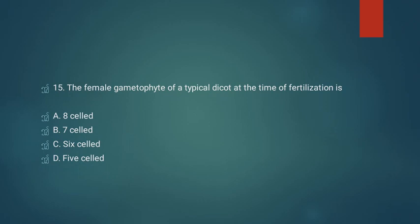Question number fifteen: the female gametophyte of a typical dicot at the time of fertilization is. Option A: 8-celled. Option B: 7-celled. Option C: 6-celled. Option D: 5-celled. How many cells are present in the female gametophyte of a dicot at the time of fertilization? This is a direct question — the answer is 7-celled. Option B is the right answer. Thank you.